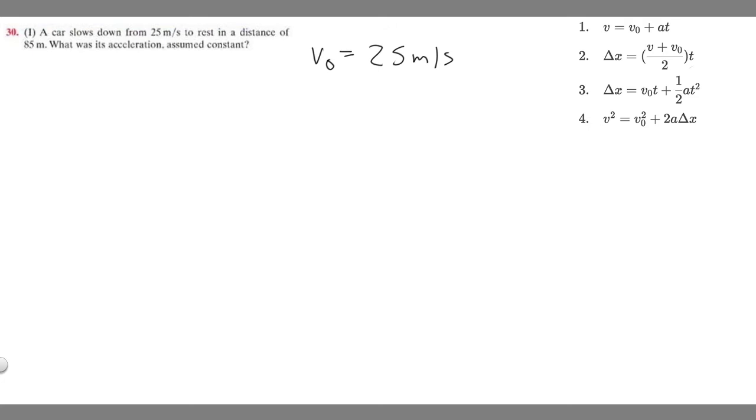And then v in this equation just represents the final velocity. So at the end, it's going to be resting, so its final velocity is going to be 0. Because when something's at rest, its velocity is 0. So, 0 meters per second.